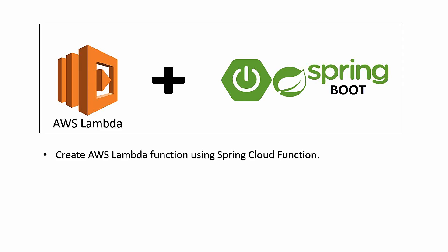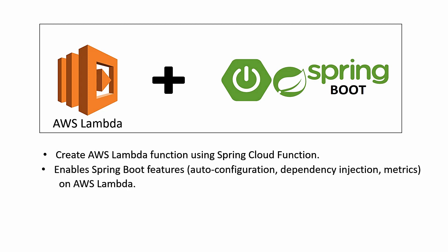Welcome to this tutorial. In this tutorial we are going to see how to create an AWS Lambda function using Spring Cloud Function. The main advantage of using Spring Cloud Function with AWS Lambda is it enables Spring Boot features like auto-configuration, dependency injection, and metrics like that on AWS Lambda. So let's begin.